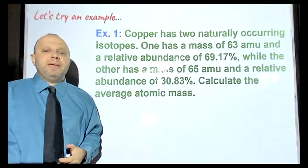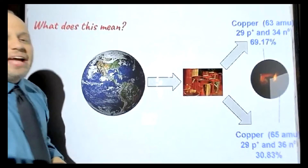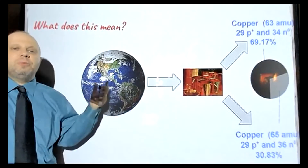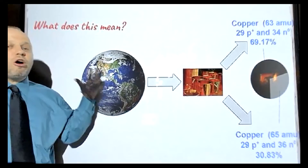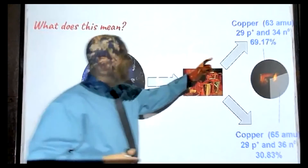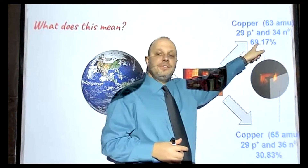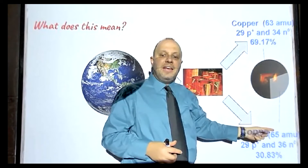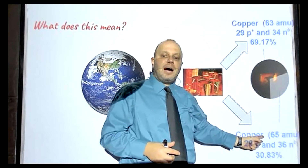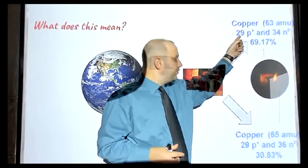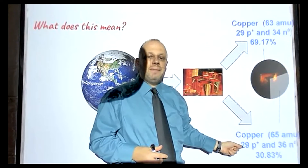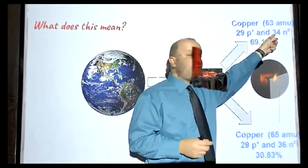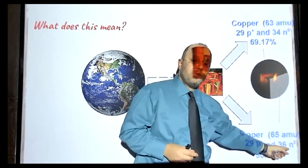If you imagine all of the copper on Earth gathered in one spot, 69.17% of that copper would have a mass of 63 AMU, and 30.83% would have a mass of 65 AMU. They're isotopes because they both have 29 protons but different numbers of neutrons — this one has 34 neutrons and the other has 36 neutrons.